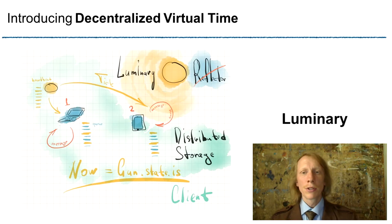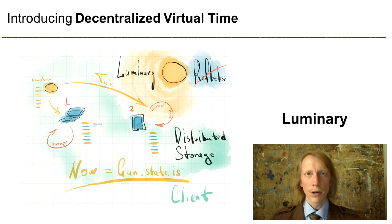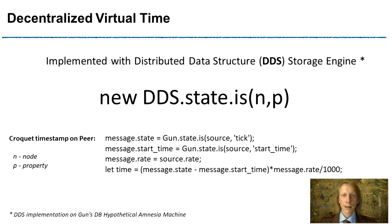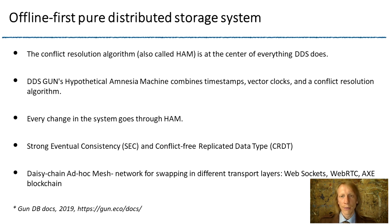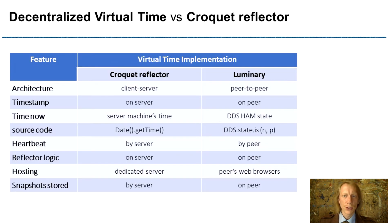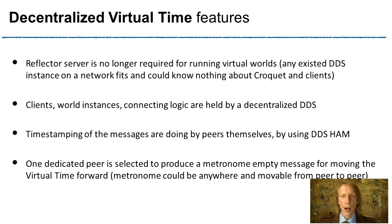Let me introduce Luminary, which could identically replace the reflector server in a Croquet-like architecture by implementing the notion of decentralized virtual time. Luminary replaces the reflector server by using an offline-first distributed data structure — for example, GunDB, a purely distributed storage system. That replacement allows, instead of reflecting messages with centralized Croquet's time-now depending on the server's machine time, to shine time on every connected node using a UDS application, a hypothetical amnesia machine, running on the decentralized peer-to-peer web.